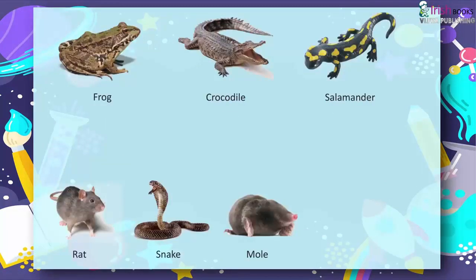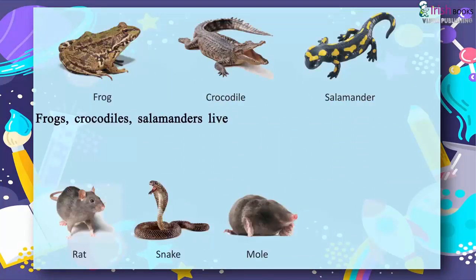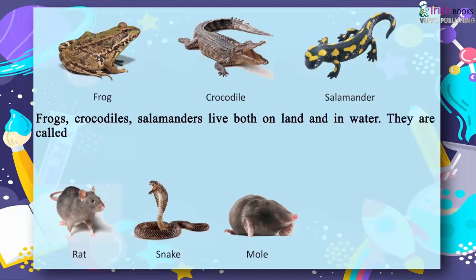Frogs, crocodiles, and salamanders live both on land and in water. They are called amphibians.